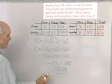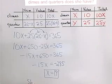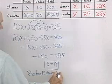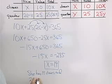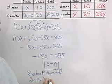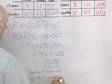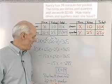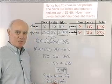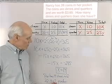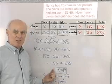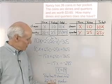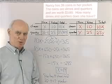According to the problem, she has 19 dimes and 26 minus 19, which is 7 quarters. 19 dimes worth 10 cents each gives $1.90 in dimes. 7 quarters worth 25 cents each gives $1.75 in quarters. $1.75 plus $1.90 equals $3.65, and 19 plus 7 equals 26. Everything checks with the original problem.